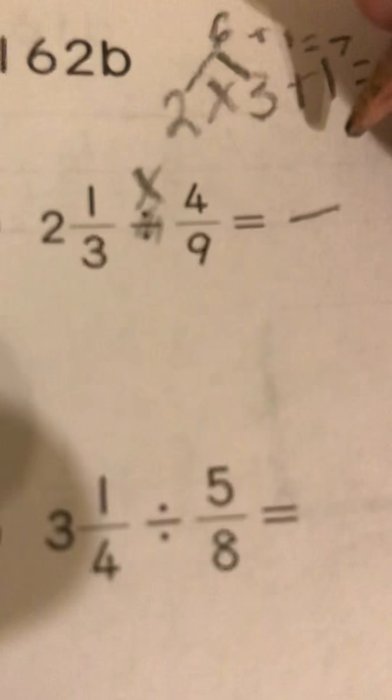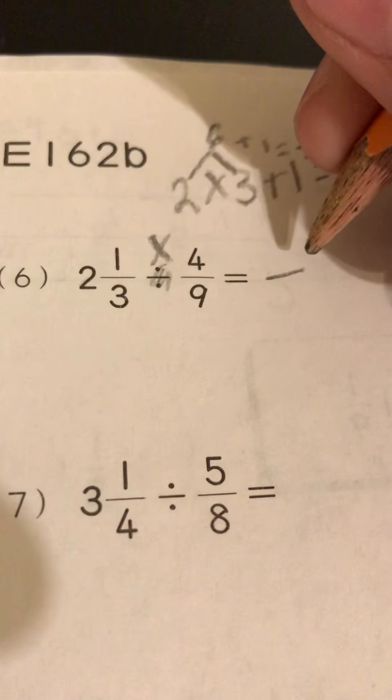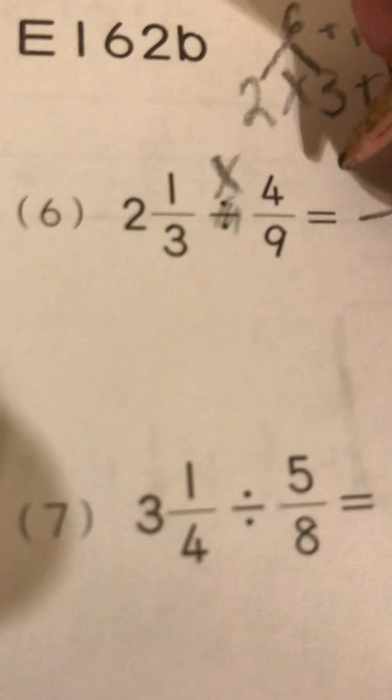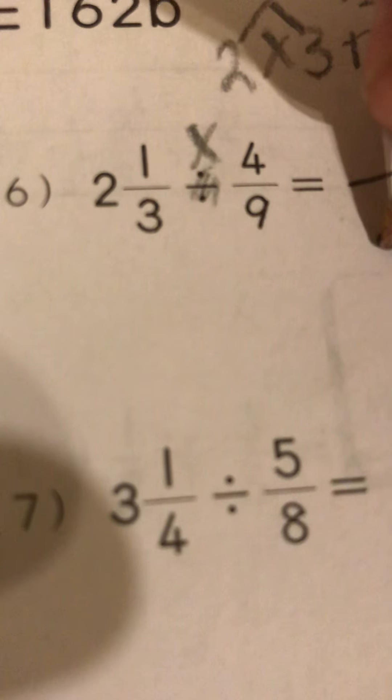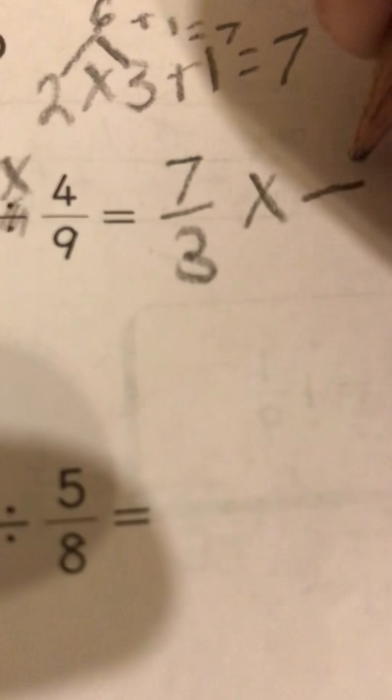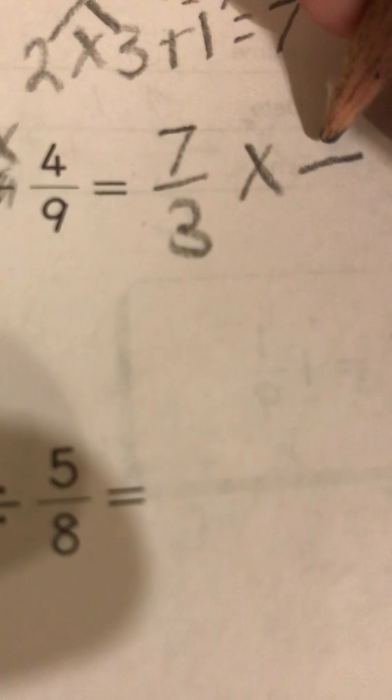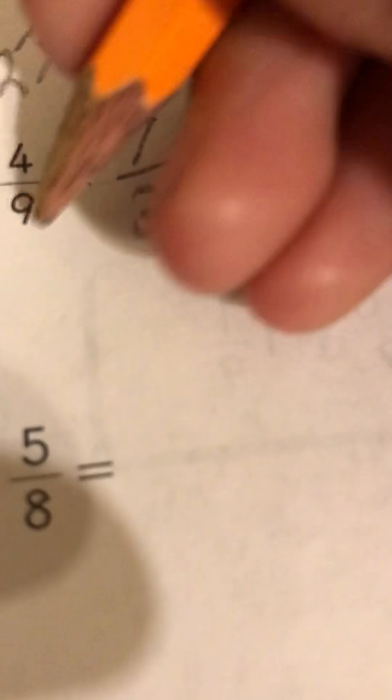Happy Pi Day by the way, today's Pi Day. So anyway, what you do is you now have seven thirds times nine over four. You always flip the numerator and the denominator for the second one.